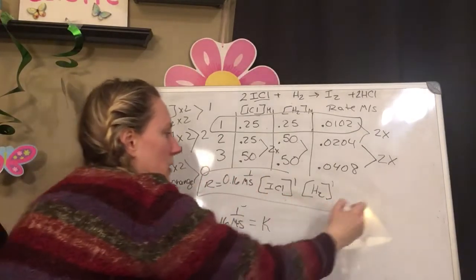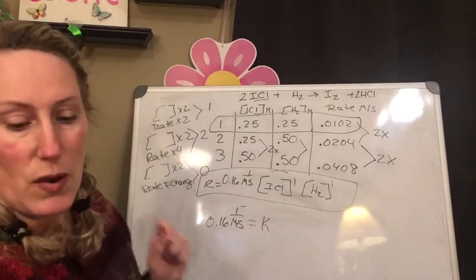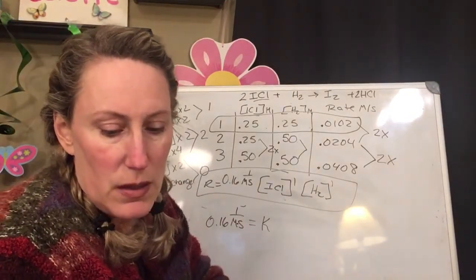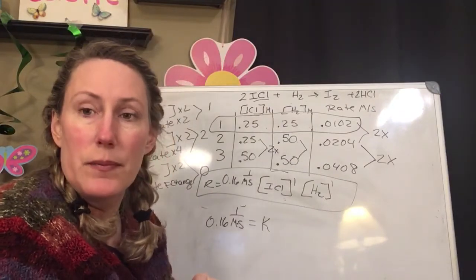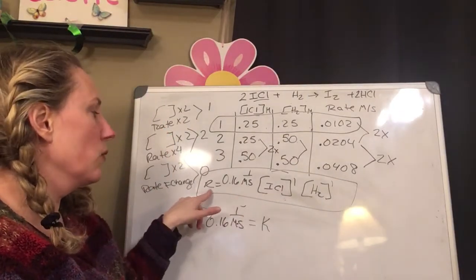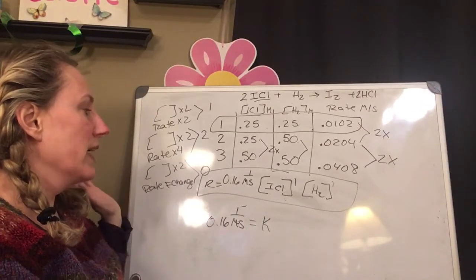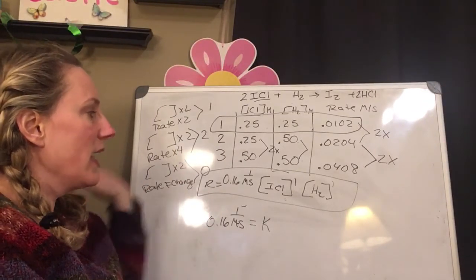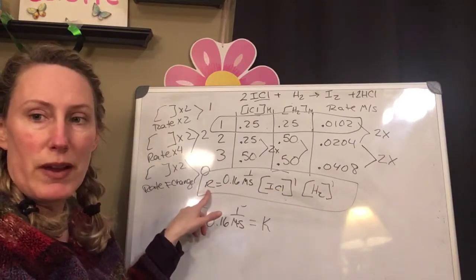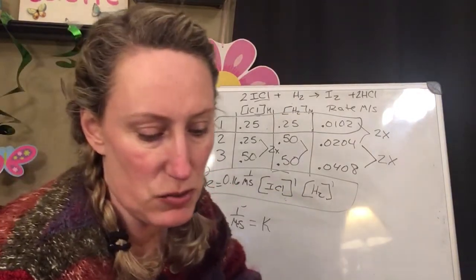So after I do, after I figure out what this is, I can figure out what my rate is. So I can now put any concentration into these, and I should figure out what my rate is, as long as I know what the next concentration is.